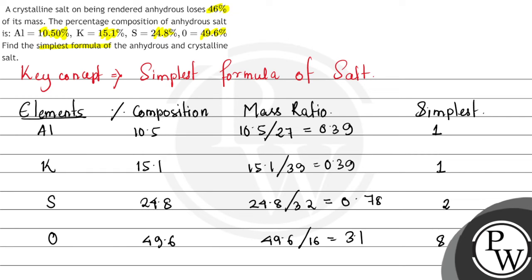We can see that the simplest formula for the anhydrous salt would be KAl(SO₄)₂. The molecular mass of this compound is 258 grams.